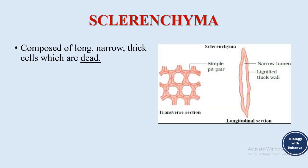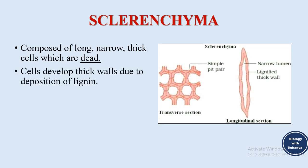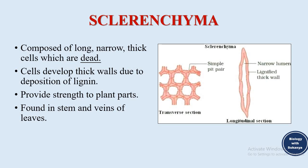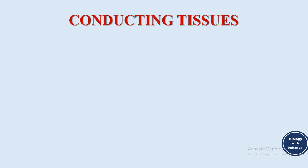Sclerenchyma is composed of long, narrow, thick cells which are dead — this is what distinguishes them from parenchyma and colenchyma. Cells develop thick walls due to the deposition of lignin, forming lignified cell walls. They provide strength to plant parts and are found in the stem and veins of leaves.